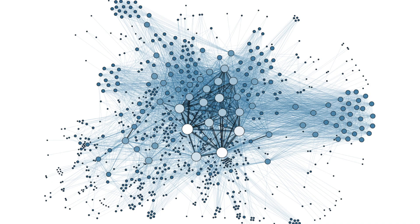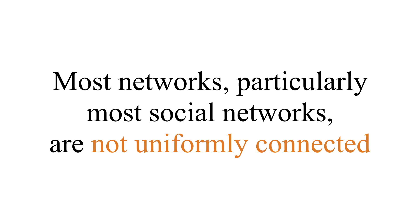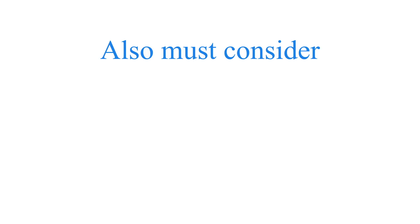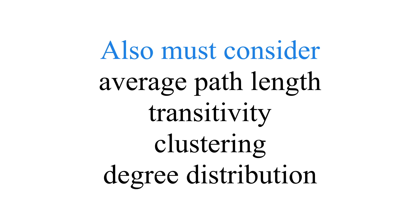You can imagine that highly connected networks are places where information and diseases can transfer easily. But most networks, and particularly most social networks, aren't uniformly connected. So while density gives us a first measure of the degree of connection, there are additional measures we want to look at: average path length, transitivity, clustering, and the degree distribution of the network.